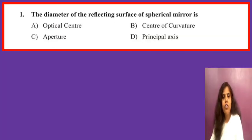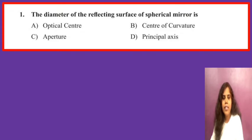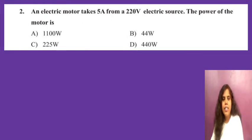The first question is a multiple choice question. The question is: the diameter of the reflecting surface of a spherical mirror is called what? Four options are given: optical center, center of curvature, and aperture. Aperture is the correct answer, so the answer will be C.